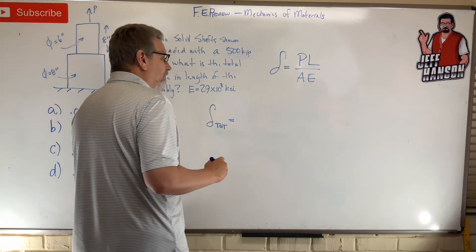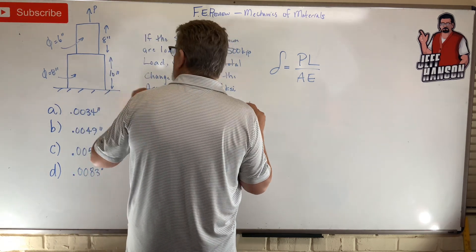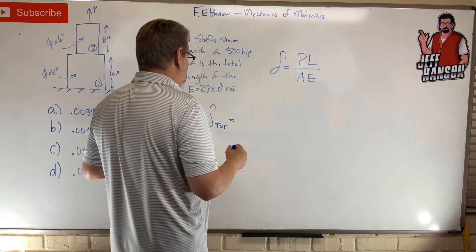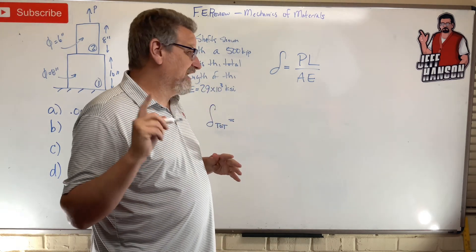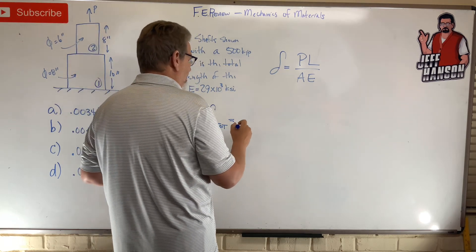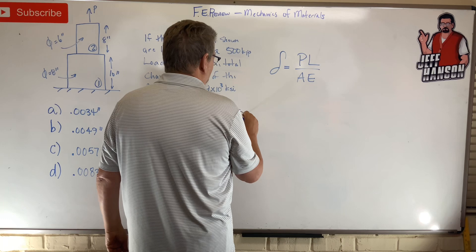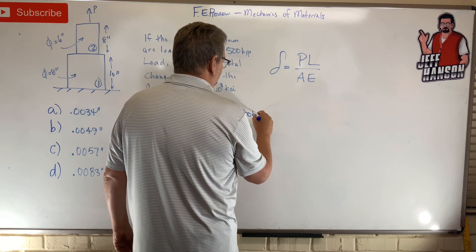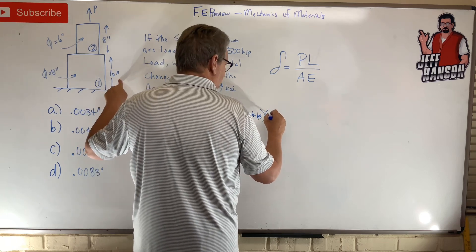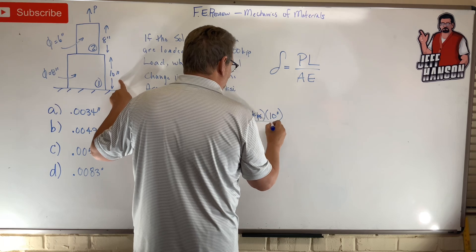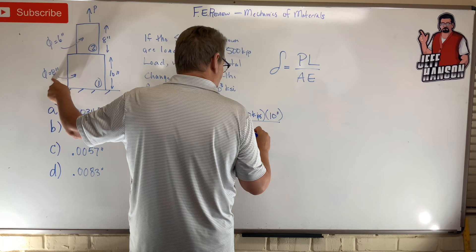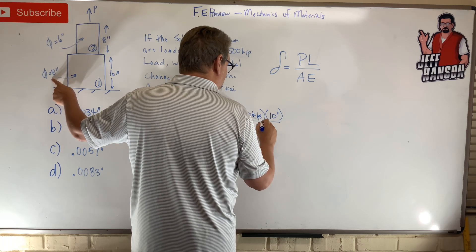Delta total equals the sum of piece one and piece two. The force is the same on each piece — 500 kips on each. For piece one: P times L over A times E — that's 500 kips times 10 inches, divided by A which is pi times r squared — r is 4 inches — so pi times 4 squared inches squared.